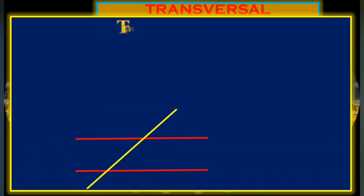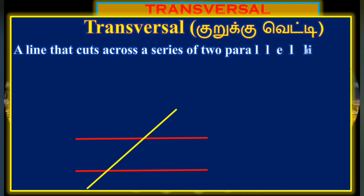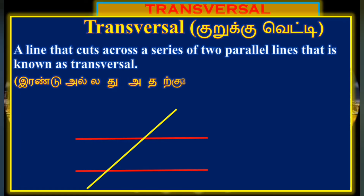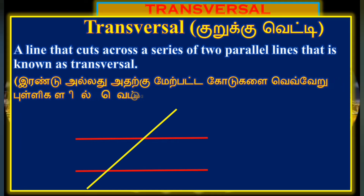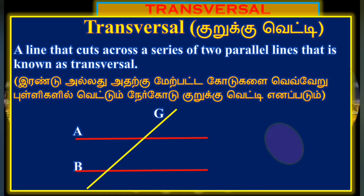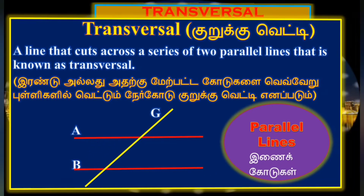A transversal is nothing but a line that cuts across a series of two parallel lines — that is known as a transversal. This is a parallel line setup where the transversal cuts across two parallel lines. The next principle involves the parallel lines.